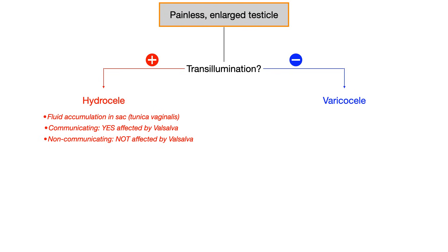When looking at a question about hydrocele versus varicocele, the big thing is transillumination. But if the test writer wants to be really annoying, they could ask about communicating versus non-communicating. Communicating is affected by Valsalva and therefore reducible. Non-communicating is not affected by Valsalva and therefore not reducible — easy to remember because non-communicating has "non" in the name.